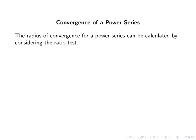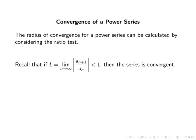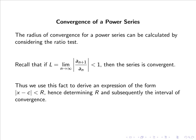The radius of convergence for a power series can be calculated by considering the ratio test. Recall that if the limit as n goes to infinity of the absolute value of a_{n+1} divided by a_n is less than 1, then the series is convergent. Thus we will use this fact to derive an expression of the absolute value of x minus c is less than r, hence determining r and subsequently the interval of convergence.